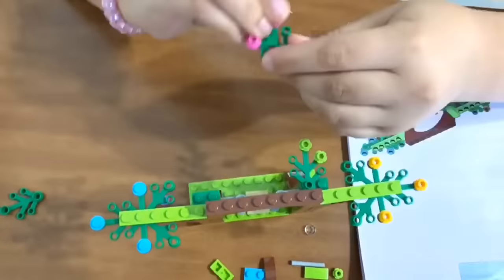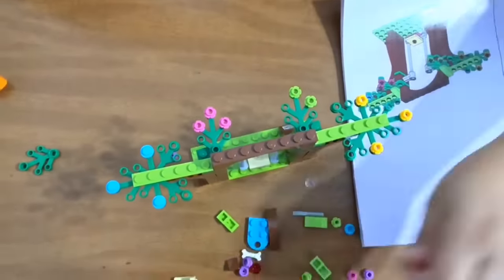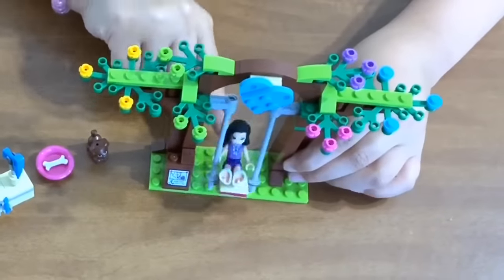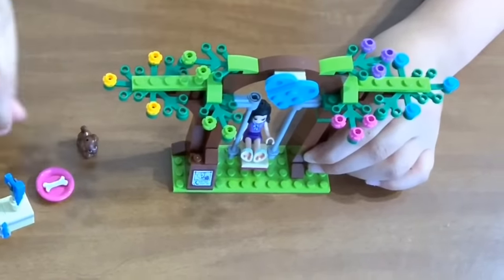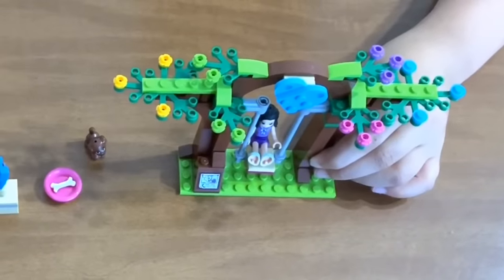There's a color for each girl. We have orange yellow for Andrea, and we have green for Mia, we have pink for Olivia, we have purple for Emma, and we have blue for Stephanie.